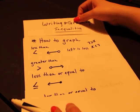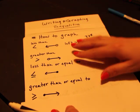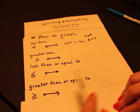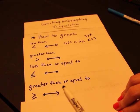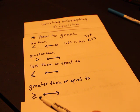And then finally with our graphing, we've got greater than or equal to. Same thing as greater than except this time we're using a closed circle because it's got the or equal to part. So we're going to move on to our examples.